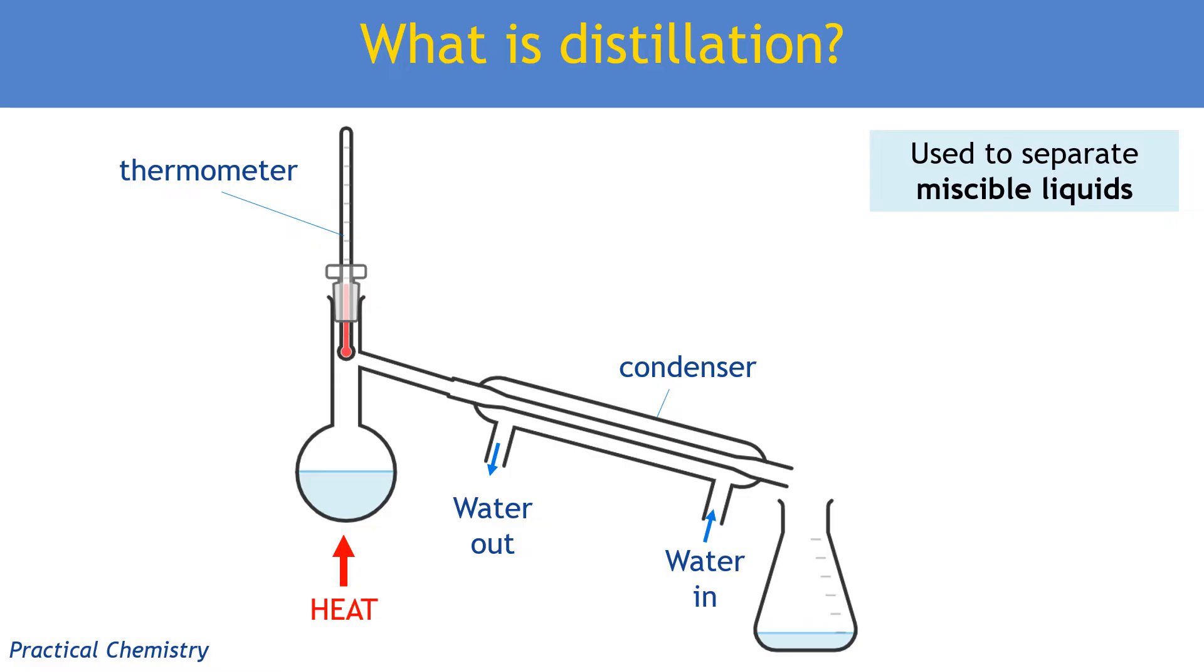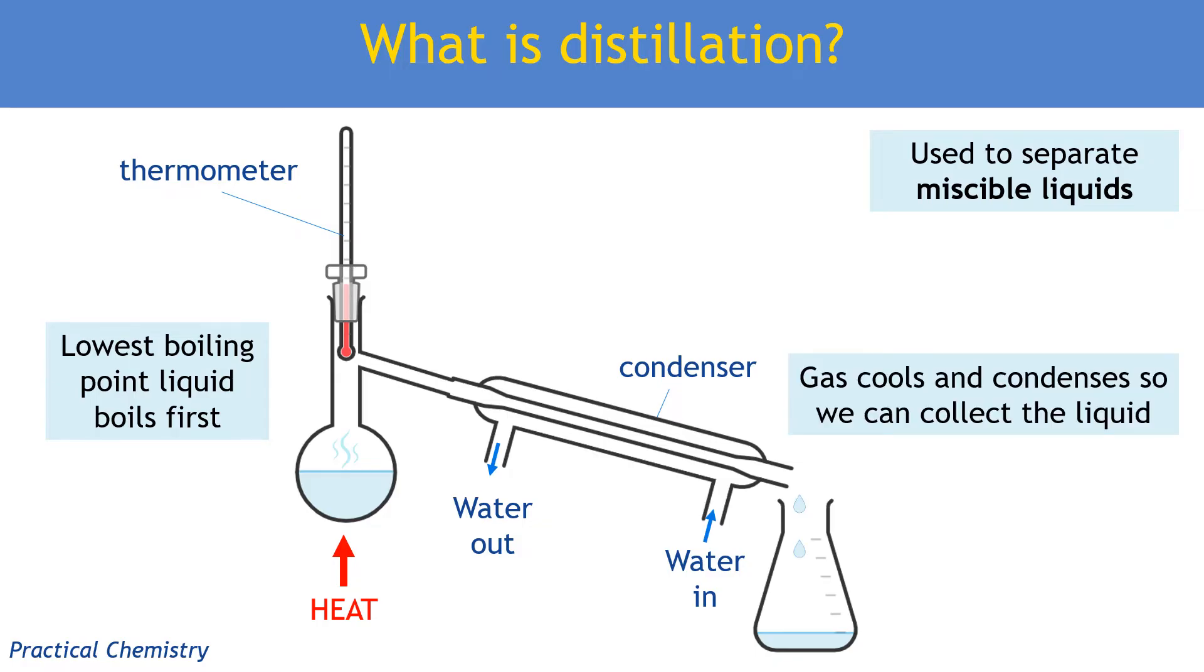As we heat that liquid mixture, the liquid with the lowest boiling point is going to boil first, and so turns into a gas, and those vapours are going to travel up and into the condenser. In the condenser, because of that cold water supply around the outside, the gas will cool down, condenses, and we can collect the liquid at the end of the condenser.